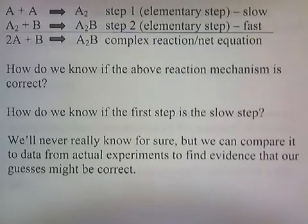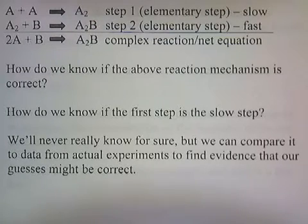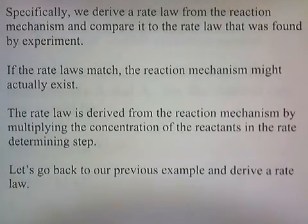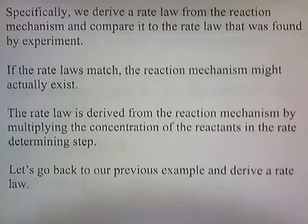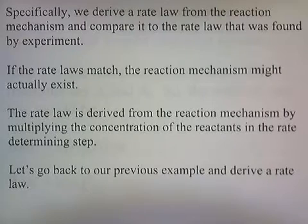But how do we know if the above reaction mechanism is correct? We'll never really know for sure, but we can compare it to data from actual experiments to find evidence that our guesses might be correct. Specifically, we derive a rate law from the reaction mechanism and compare it to the rate law found by experiment. If the rate laws match, the reaction mechanism might actually exist. The rate law is derived from the mechanism by multiplying the concentrations of the reactants in the rate determining step.